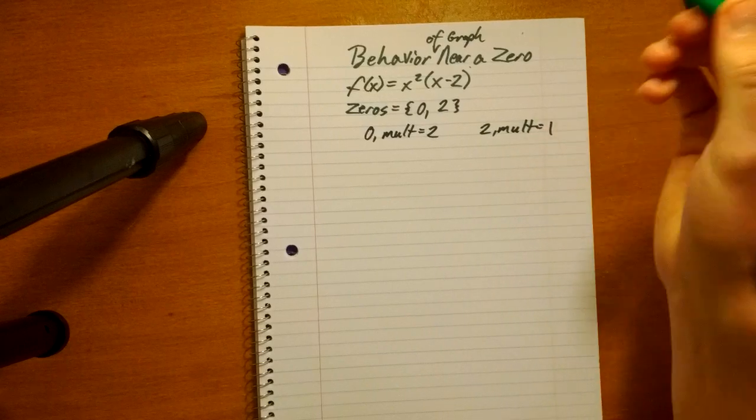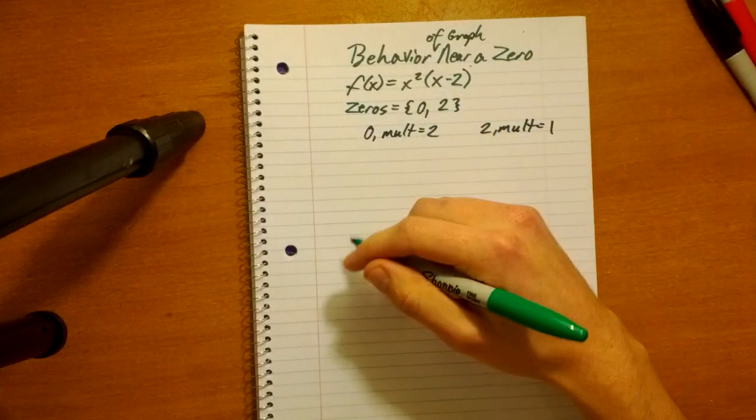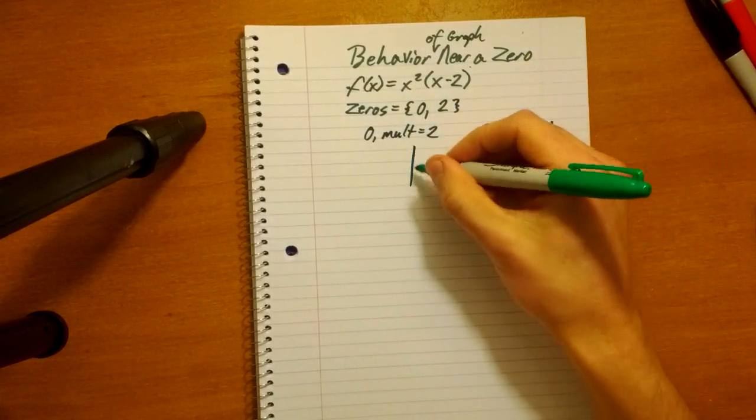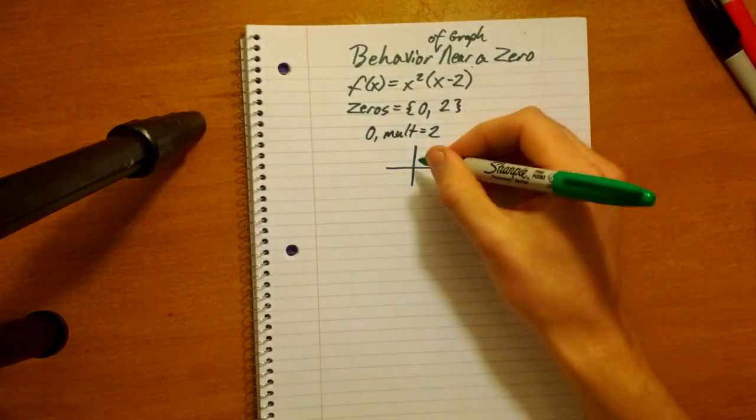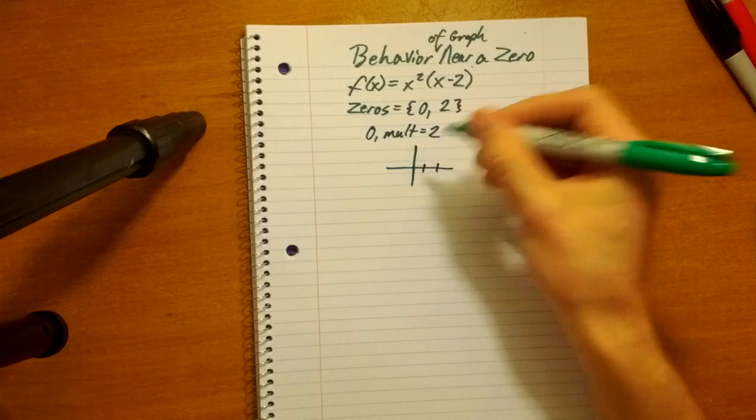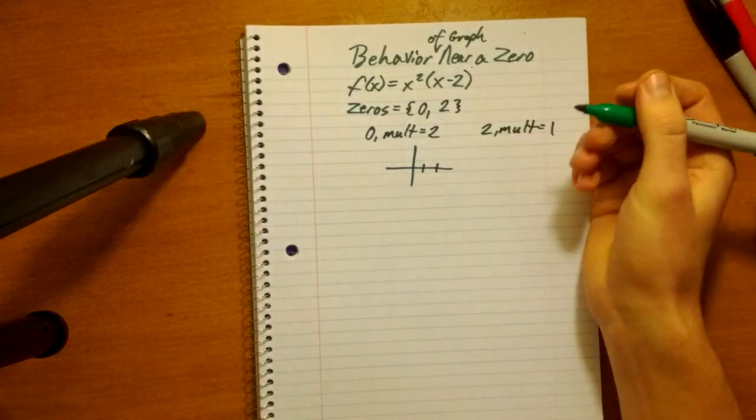Odd multiplicity, it's going to cross. Even multiplicity, it is going to touch the x-axis. So, that's some good useful information, right? So we have our x-intercepts, here's one at zero, zero, and here's one at two, zero.